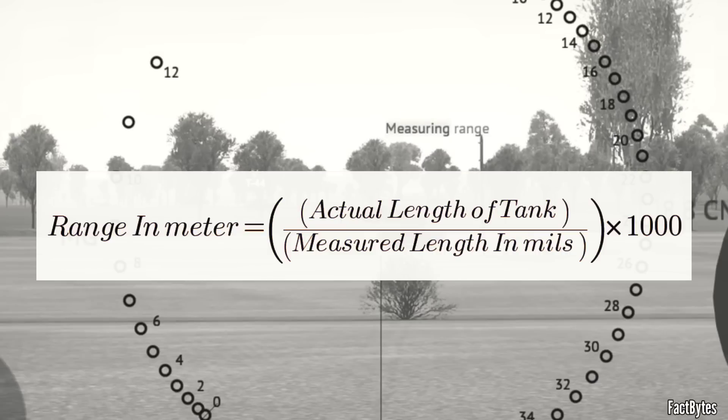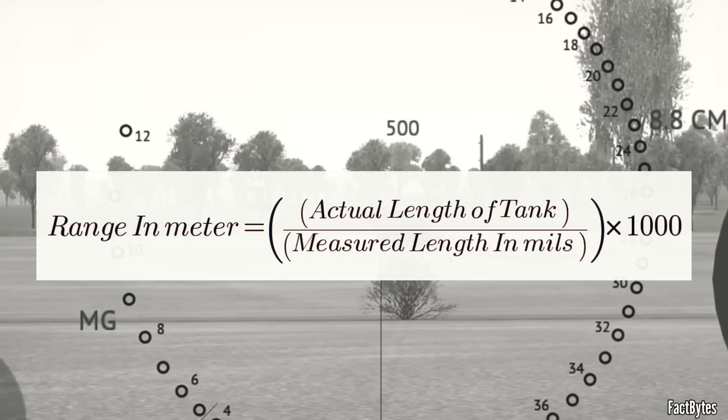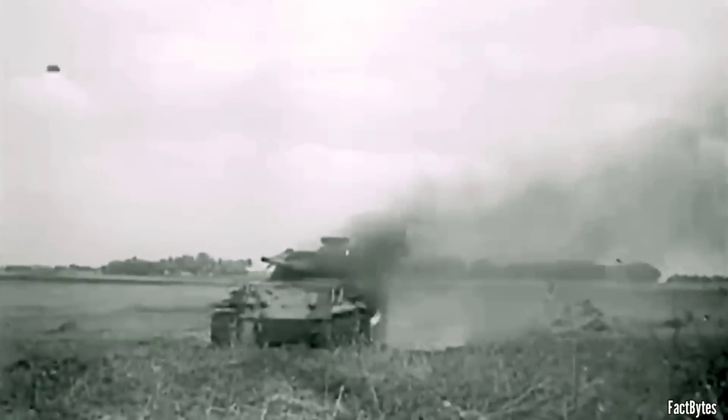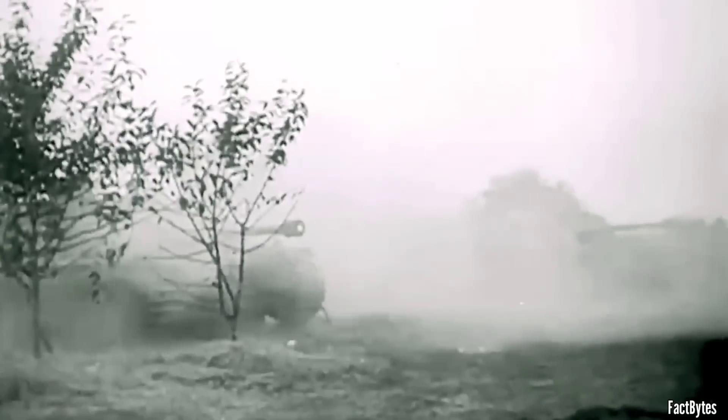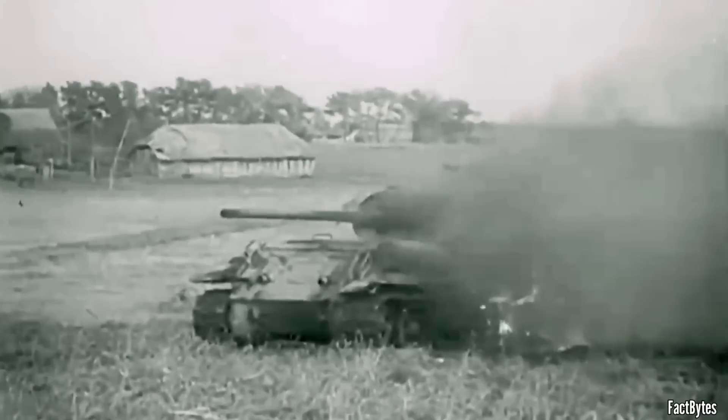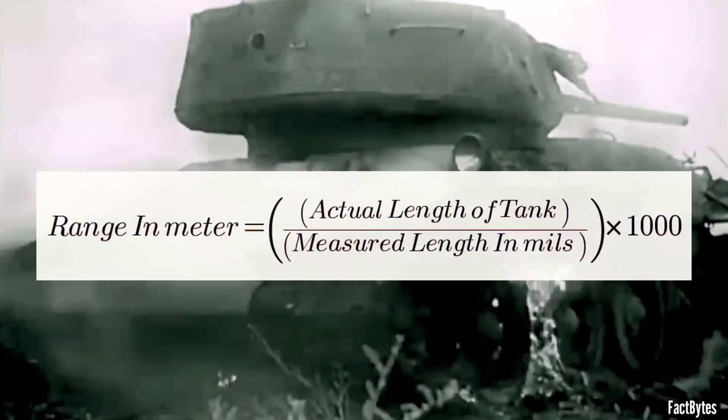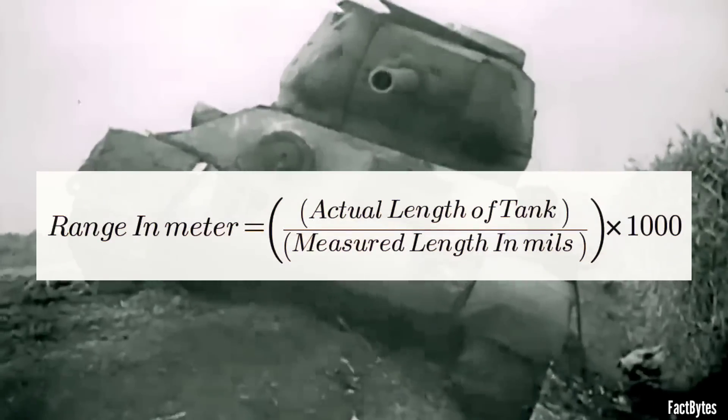This formula was effective because the Allies and Soviets mass-produced a limited number of tank models throughout the war. Tanks such as the American-built Sherman and Stuart, British-built Cromwell and Churchill, and Soviet-built T-34, IS-2, and KV-1 were commonly encountered by the Germans. Many of these tanks were either destroyed or captured, allowing the Germans to meticulously measure their dimensions. These measurements were then used in the range-calculating formula mentioned earlier, enabling German tank gunners to accurately determine the range to enemy targets on the battlefield.